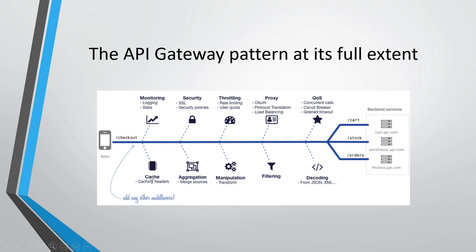With the response from the backend, we can work with it and change it accordingly — there are different types of things we can handle with the API gateway.